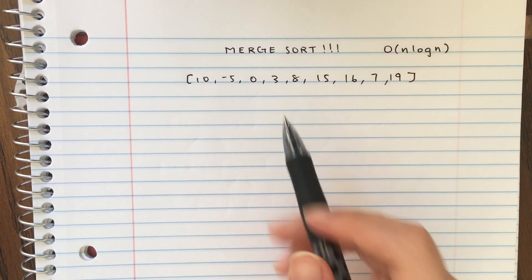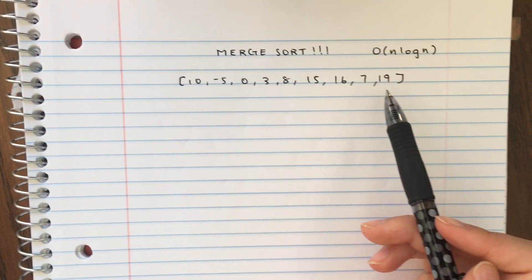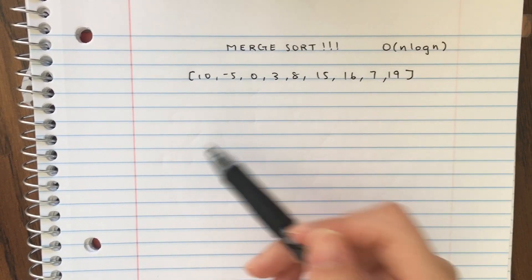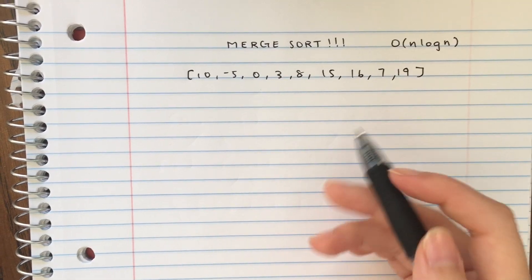Something to remember is that when you have an odd number of elements, you have to choose to put that extra element on the left or the right. It doesn't matter which one as long as you stay consistent throughout.